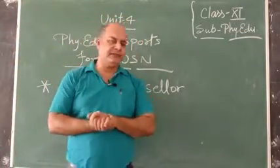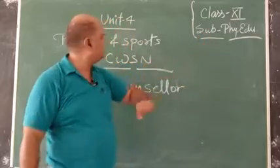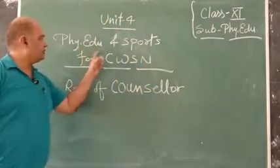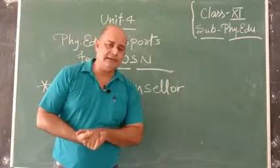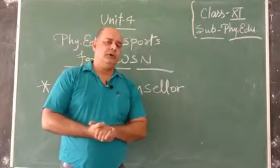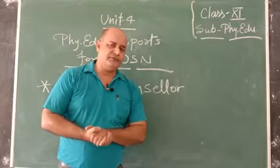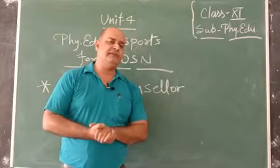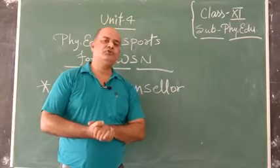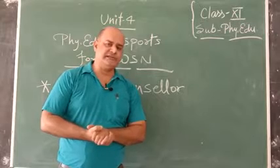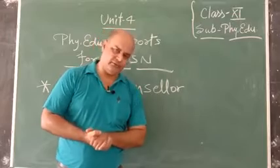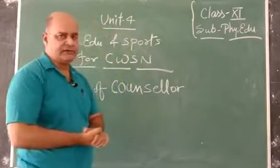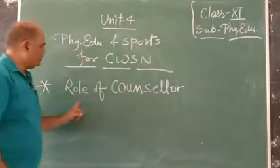Welcome to all in the class of Physical Education for Class 11th, Unit 4: Physical Education and Sports for CWSN. CWSN, as you know, the full form is Children With Special Needs. It means those who are intellectually disabled. This type of person or children is called CWSN.